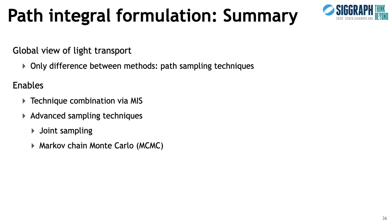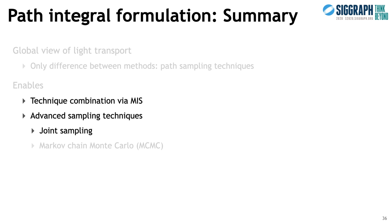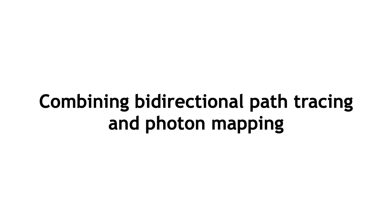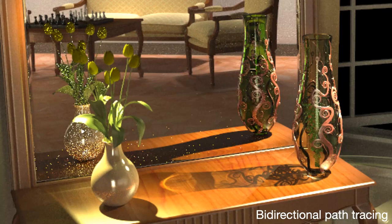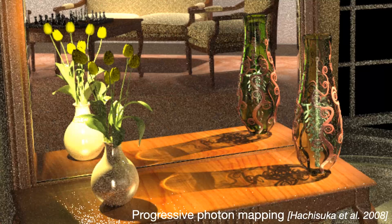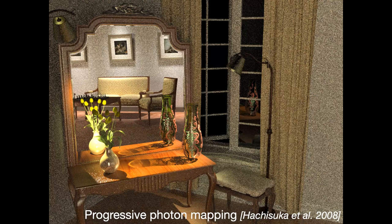We'll now see how to leverage the path integral framework to address the problem of insufficient techniques by bringing techniques from photon mapping into bidirectional path tracing. Photon mapping can render certain caustics very efficiently, but has issues with glossy reflections and distant diffuse lighting. Bidirectional path tracing and photon mapping have traditionally been considered incompatible solutions to the light transport problem, due to different mathematical frameworks — bidirectional path tracing as Monte Carlo estimation of the path integral, and photon mapping as a photon density radiance estimator. The key idea to combining these methods is to formulate them in the same framework.